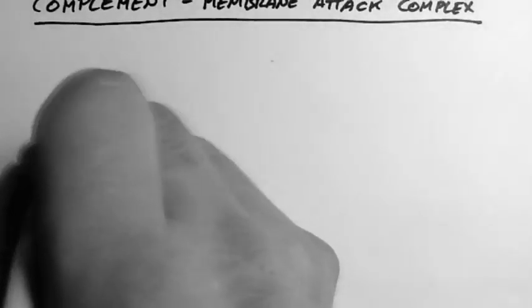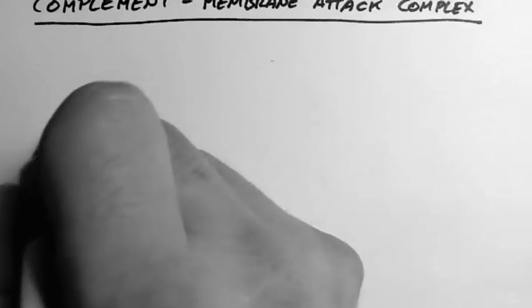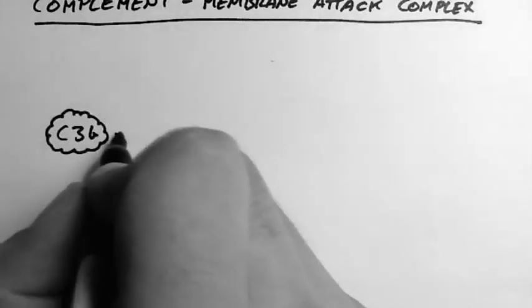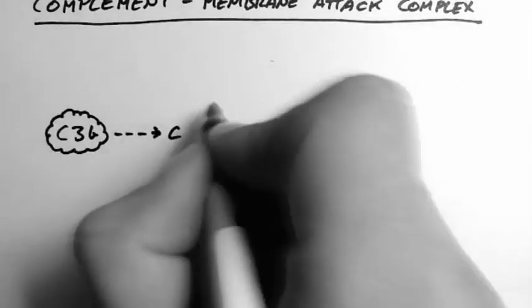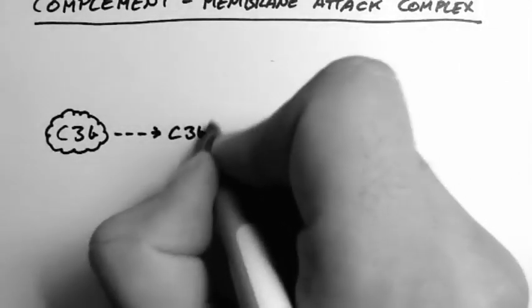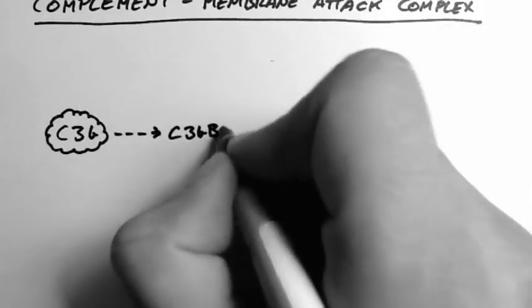Now in the alternative pathway video, we looked at how C3b, which is common to all the pathways of complement, causes the formation of C3bBB3b.